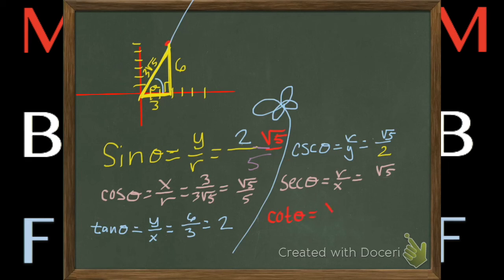Okay. So then the cotangent is x over y, which is three over six, which is one half. First time I saw this I dropped things too.